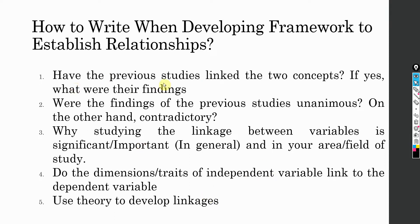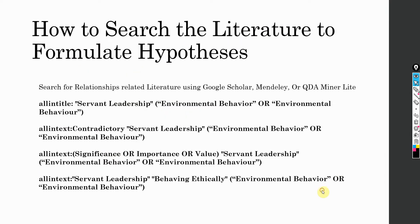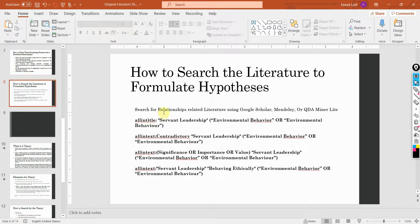Now that you know the critical ingredients when developing a framework to establish relationships, how do you search the literature to formulate these hypotheses? How do you search literature to develop the relationships? We are going to use these search strings in Google Scholar. You can use Mendeley or QDA Miner Lite as well, and there are detailed sessions on the channel.